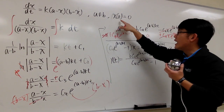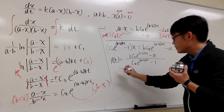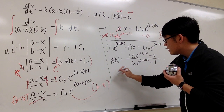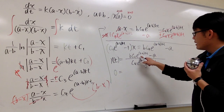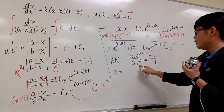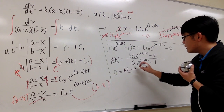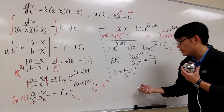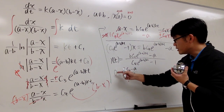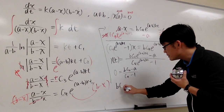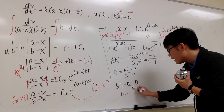However, we do have an initial condition. Plugging in t equals 0 and x equals 0, since e to the 0 is 1, we get 0 equals (b times c4 minus a) over (c4 minus 1). For a fraction to equal 0, the numerator must be 0, so b times c4 minus a equals 0. Solving this gives c4 equals a over b.